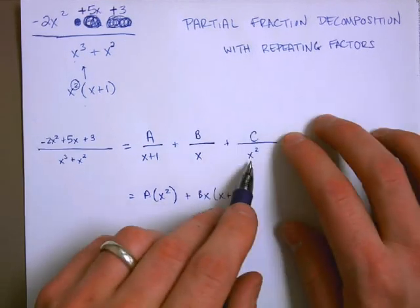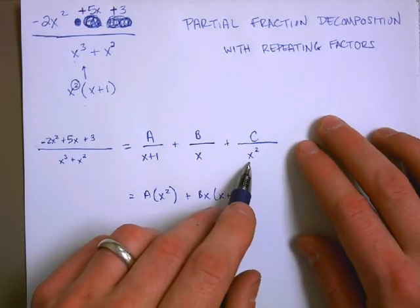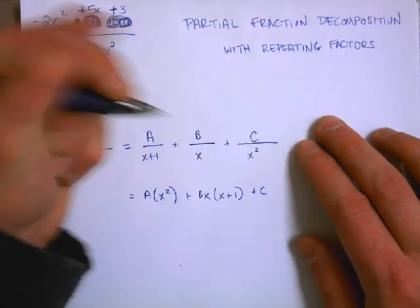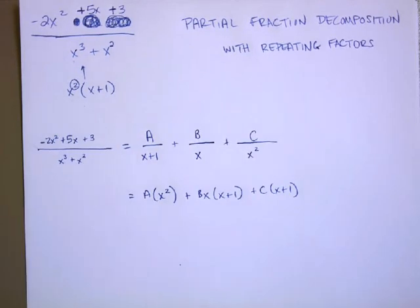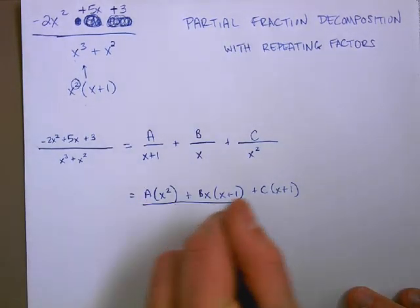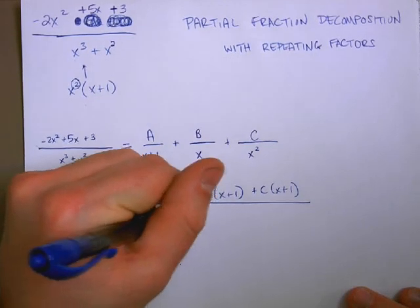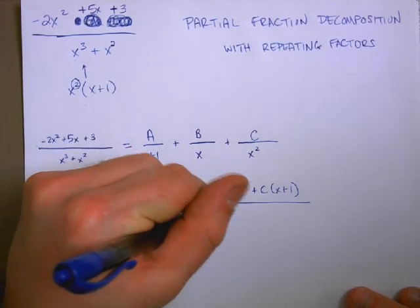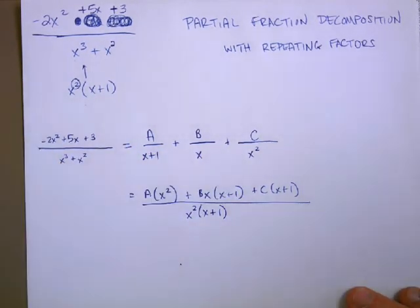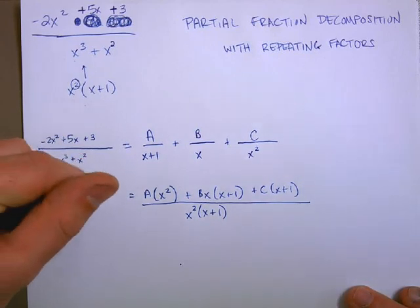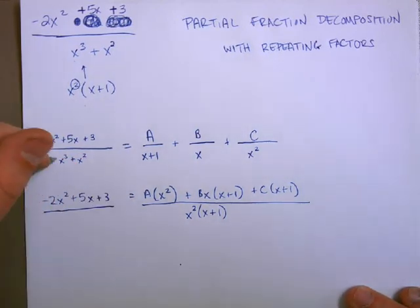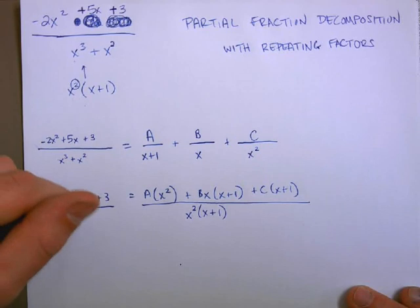The c term already has the highest power of x, it has the x squared, so I only need to multiply the c term by x plus 1. Now, I can put those all over my common denominator of x squared times x plus 1, and those need to add together to get negative 2x squared plus 5x plus 3 all over.